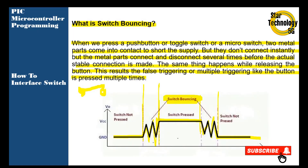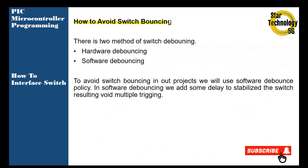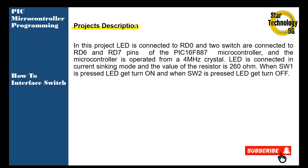How to avoid switch bouncing? There are two methods: hardware debouncing and software debouncing. In hardware debouncing, ICs and circuits are used to debounce the switch. In our project we will use software debouncing. In software debouncing, we add some delay to stabilize the switch, avoiding multiple triggering. We will use software debouncing because it is easy — we simply add a delay to give the microcontroller time to stabilize the switch, and after that we read the switch.